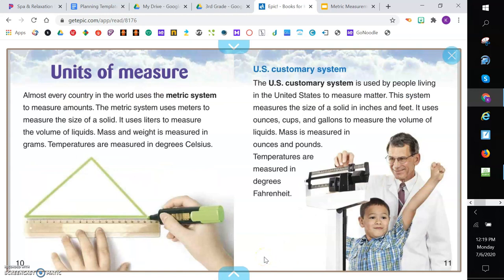Units of measure. Almost every country in the world uses the metric system to measure amounts. The metric system uses meters to measure the size of a solid. It uses liters to measure the volume of liquids. Mass and weight is measured in grams. And temperatures are measured in degrees celsius.